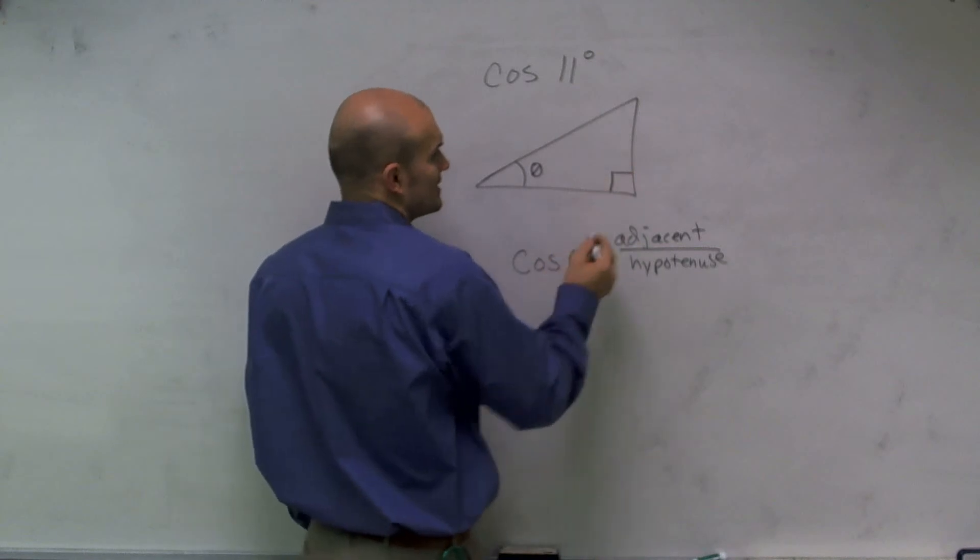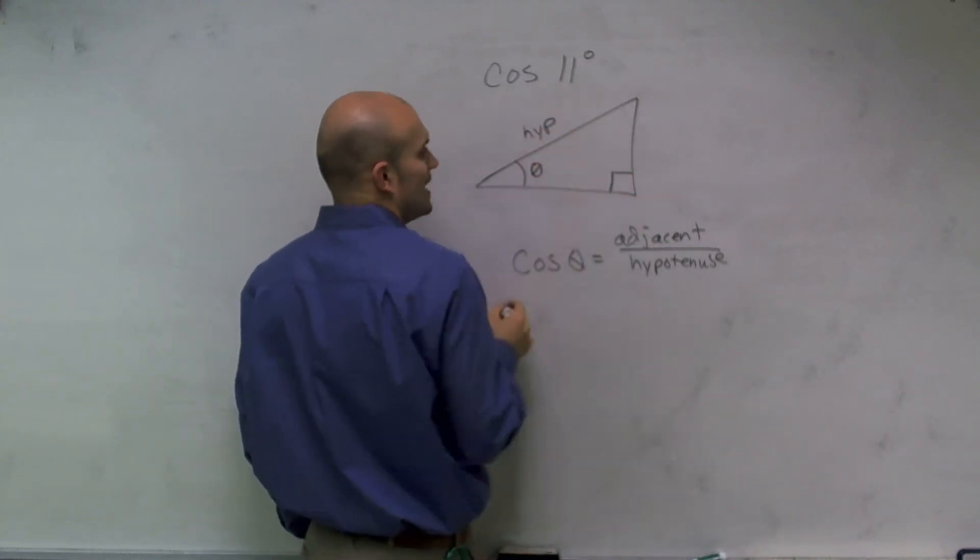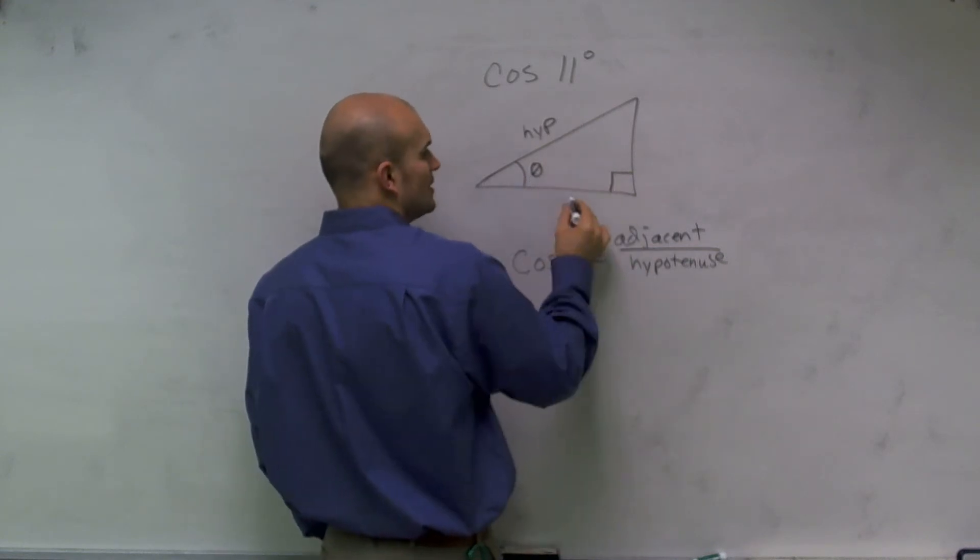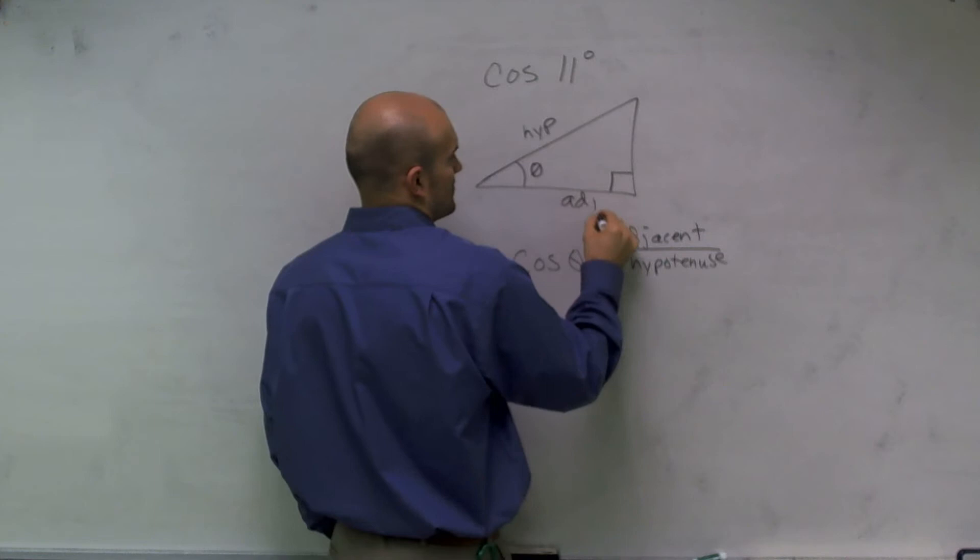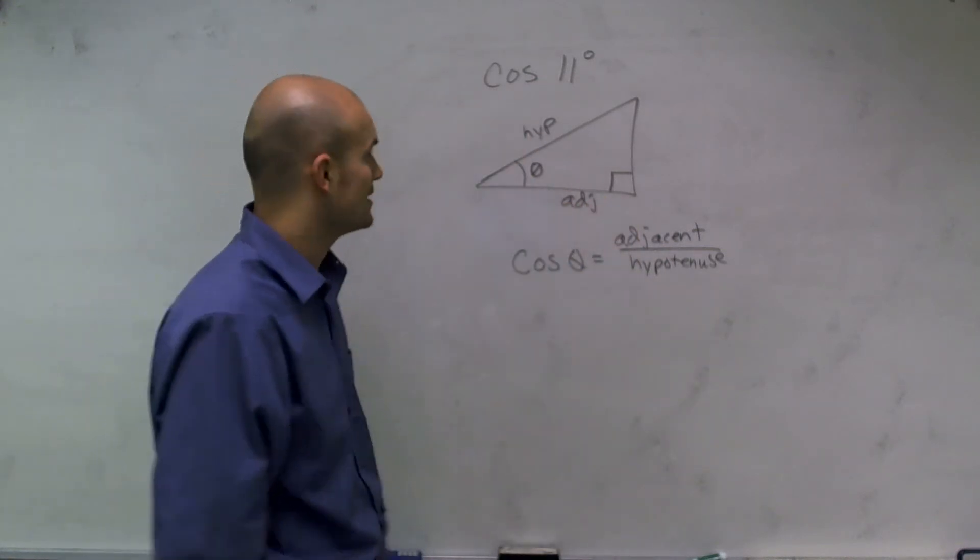So when we're looking at this, the opposite of my right angle is going to be my hypotenuse. And the angle that connects my angle theta with my right angle is going to be my adjacent side. So cosine is going to represent the ratio of my adjacent over my hypotenuse.